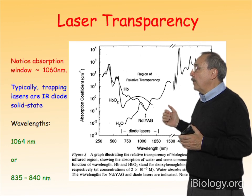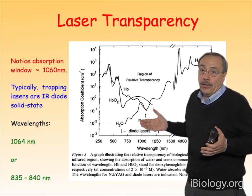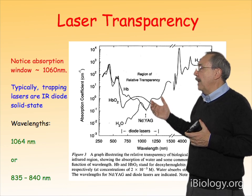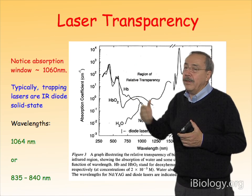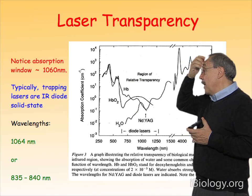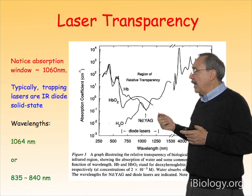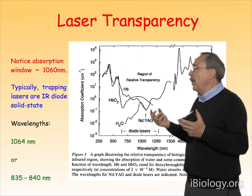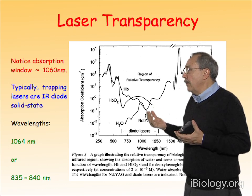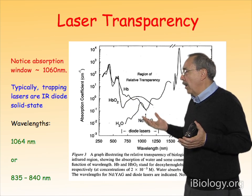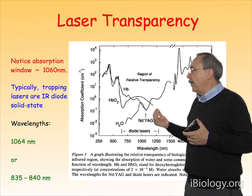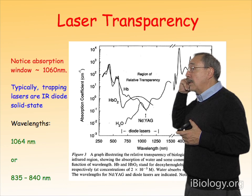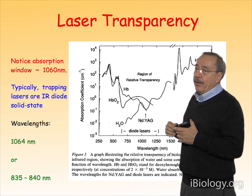On the other hand, we also have to take into account that when studying biological samples, proteins and molecules will also absorb light. Things like hemoglobin, for example, have an increasing absorption spectrum towards lower wavelengths, towards the blues. So if you look at this spectrum, you see there is a point where we have a minimum of absorption for both water and biological molecules, which occurs at approximately 1060 nanometers.